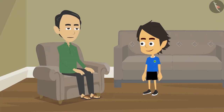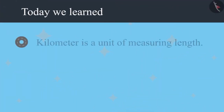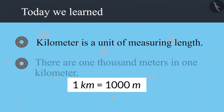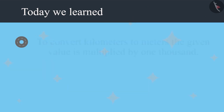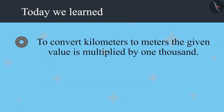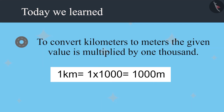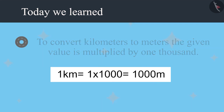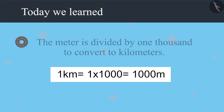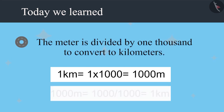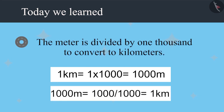Now check on the internet what all is worth visiting in Nainital and start planning so we don't miss anything. Today we learned that the kilometer is a unit of length measurement. There are 1000 meters in a kilometer. Multiply by 1000 to convert kilometers into meters, and divide by 1000 to convert meters into kilometers.